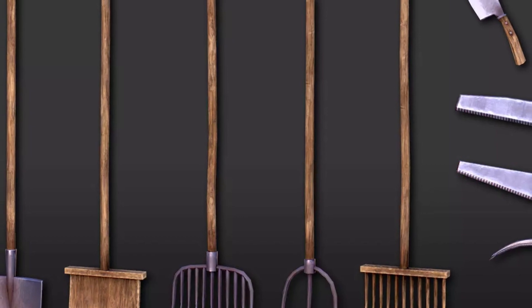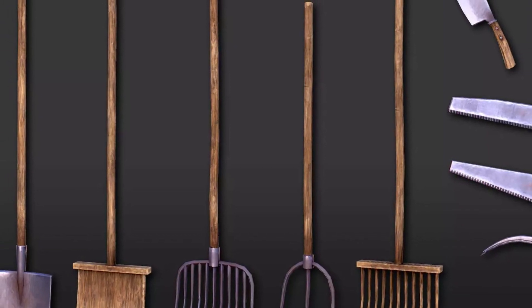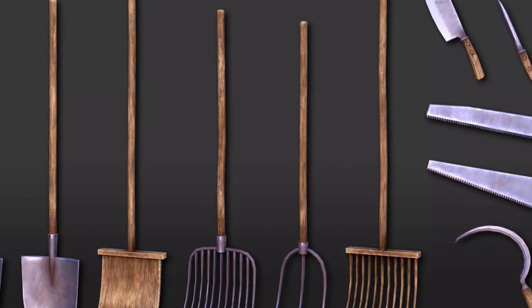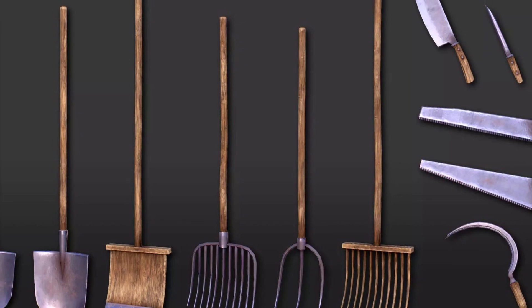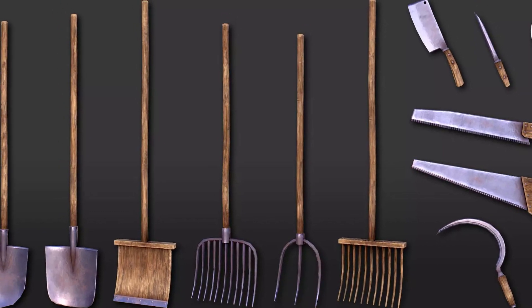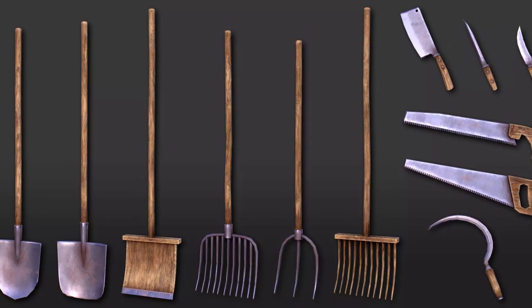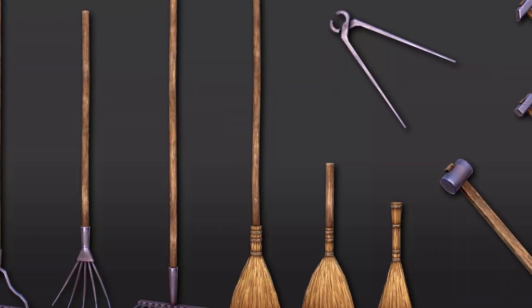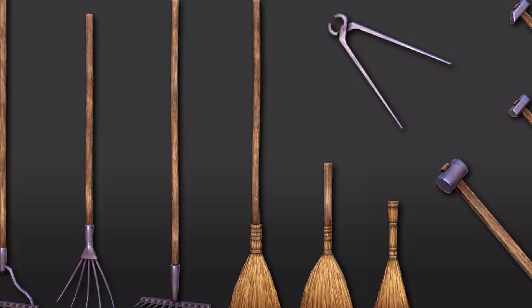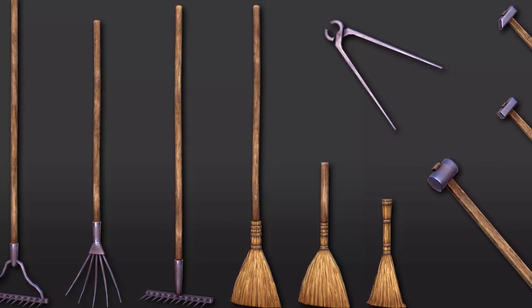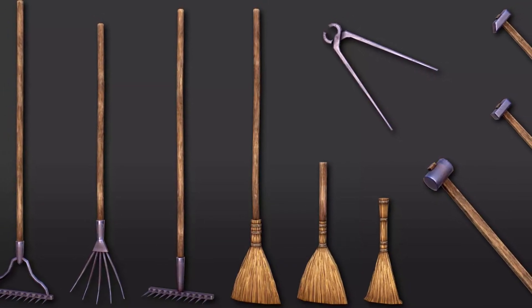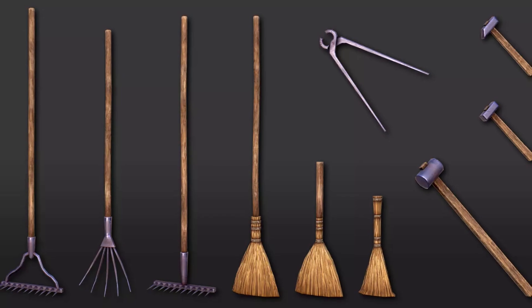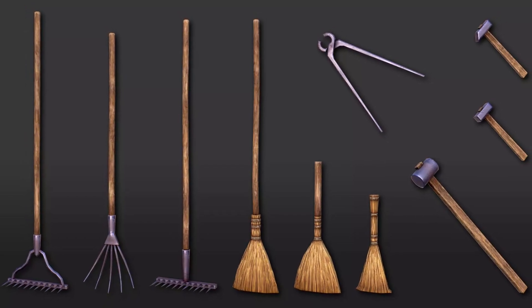Number one is the Gardening Tools Pack 26 PBR objects, which contains 26 different objects in 1k resolution with three different shovels, pitchforks, rakes, brooms, axes, scythes, hammers, saws, pincers, sickles and knives.